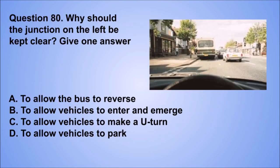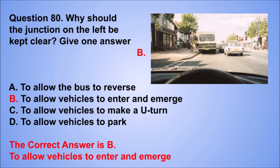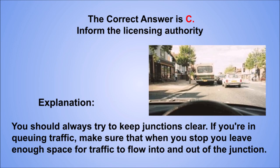Question 80. Why should the junction on the left be kept clear? Give one answer. A. To allow the bus to reverse. B. To allow vehicles to enter and emerge. C. To allow vehicles to make a U-turn. D. To allow vehicles to park. The correct answer is B, to allow vehicles to enter and emerge. You should always try to keep junctions clear. If you're in queuing traffic, make sure that when you stop you leave enough space for traffic to flow into and out of the junction.